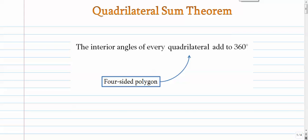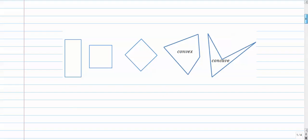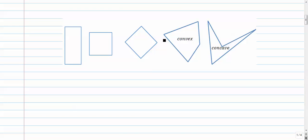Okay, a couple quick examples here on the quadrilateral sum theorem. This is the notion that the interior angles of every single four-sided polygon add up to 360 degrees. That's true no matter what you look like. If you're a rectangle, a square, a rhombus, if you're convex, if you're concave, that's true of everything.